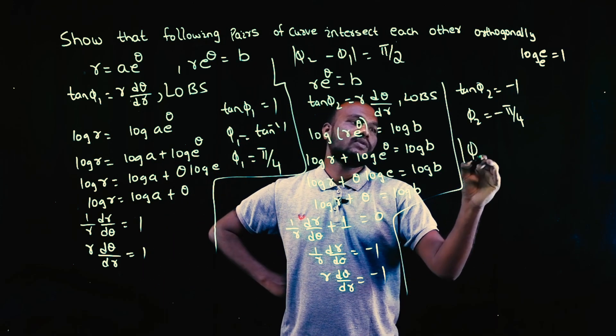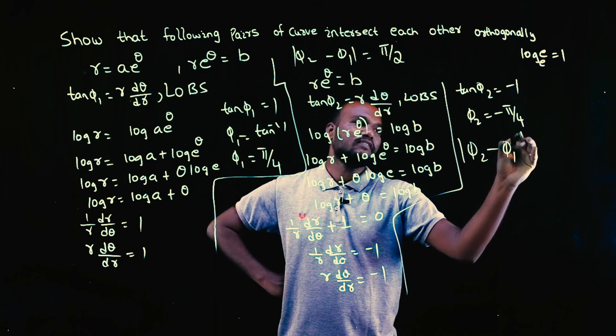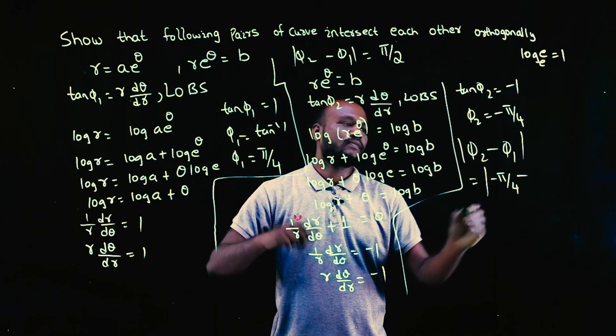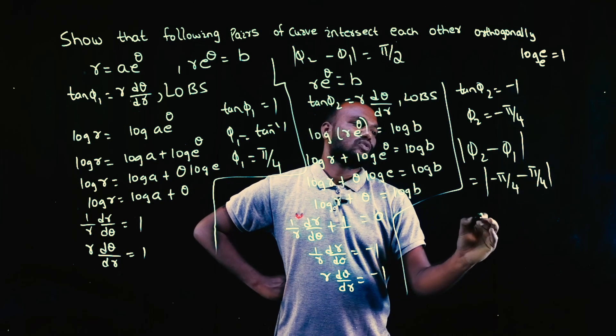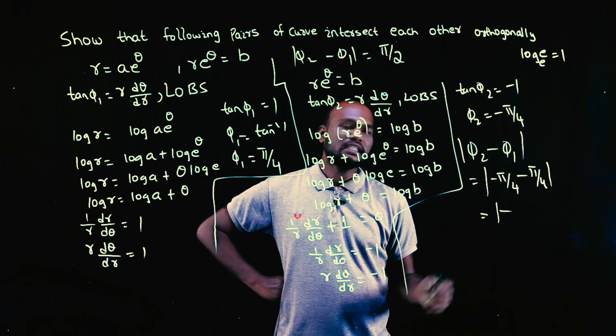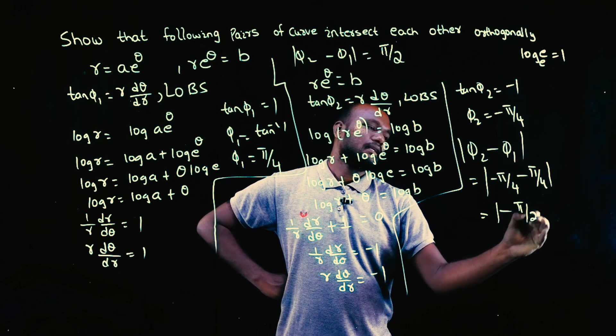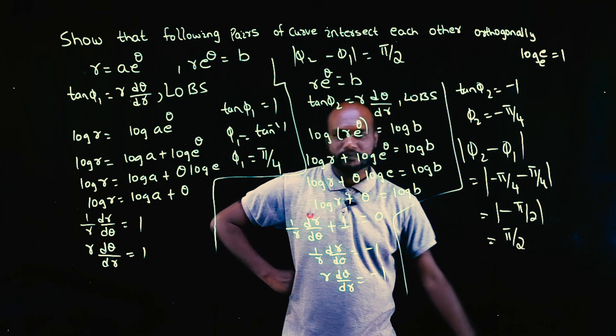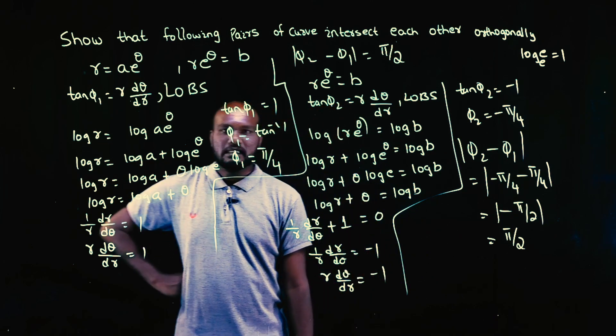Why am I interested in phi 2? No, I am interested in the difference between phi 1 and phi 2. So phi 2 is how much? Minus pi by 4 minus what is phi 1? Pi by 4. So minus 45 degrees minus 45 degrees is minus 90 degrees, so minus 90 degrees. Whenever you take modulus, this will become positive: pi by 2. Is that simple? Yes.